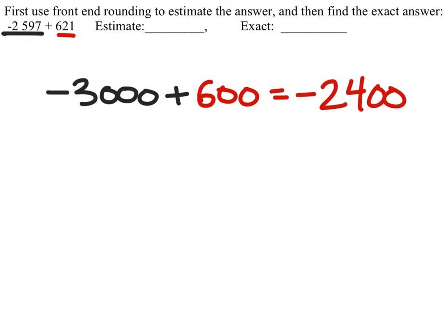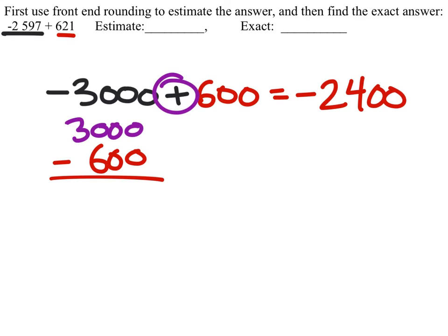And the way that I did that is I just took negative 3,000. And since I know I have more negatives in that 3,000, I ignore that negative and simply subtract 600 since they are opposite values. One is negative, one is positive. When I combine those, or in other words, I've gone to the right on the number line from that positive or plus. So that's how I got negative 2,400 as my estimate.